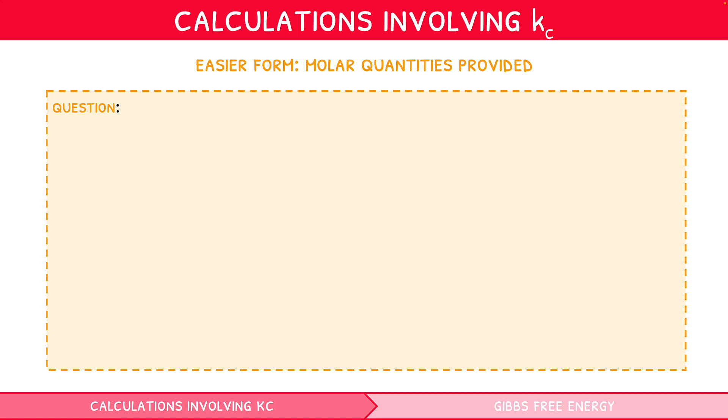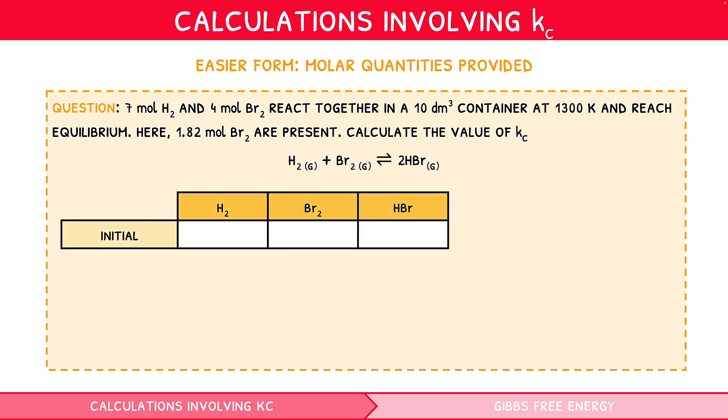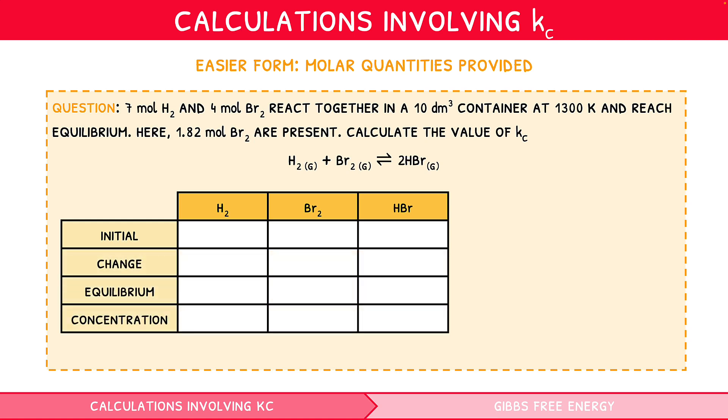The easier form is where you are asked to calculate Kc using provided molar quantities. For example, 7 mol H2 and 4 mol Br2 react together in a 10 decimetres cubed container at 1300 Kelvin and reach equilibrium. Here, 1.82 mol Br2 are present. Calculate the value of Kc. Start by writing a balanced equation for the reaction and write the titles Initial, Change, Equilibrium and Concentration down the left-hand side. Now, fill in the initial molar quantities provided: 7, 4 and 0, since there were only reactants present at the start of this reaction.